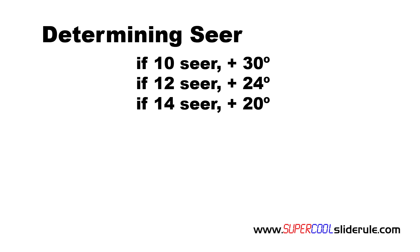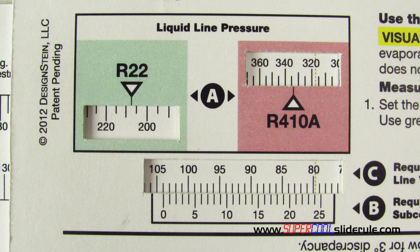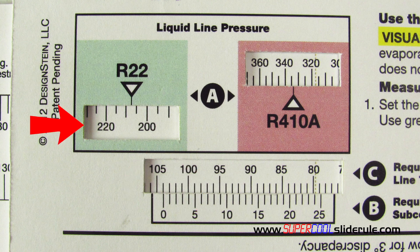In this example, our equipment will be 12 SEER. We take our outdoor ambient temperature of 80 degrees and add the 24 degrees to this, giving us 104 degrees. Set 104 degrees in the temperature window as shown here and reference the corresponding window. For R22, it is 208. For R410A, it would be 335.